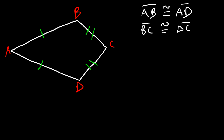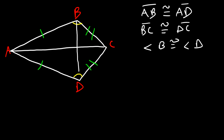Also, one pair of opposite angles are congruent — angle B and angle D are congruent to each other. Now let's focus on the diagonals. The two diagonals meet at right angles, so they're perpendicular to each other. AC bisects angle A into two congruent angles.